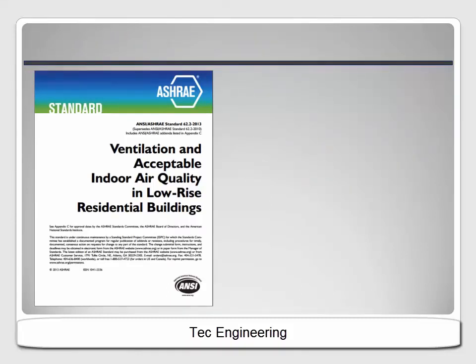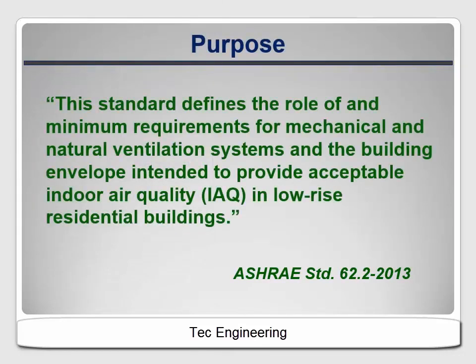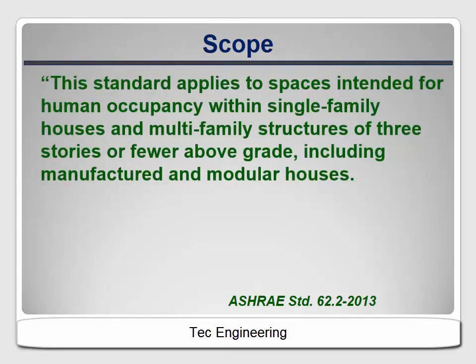Here are some quotes directly from the 2013 version of Standard 62.2. The purpose states that this standard defines the role of and minimum requirements for mechanical and natural ventilation systems and the building envelope intended to provide acceptable indoor air quality (IAQ) in low-rise residential buildings. The scope states that this standard applies to spaces intended for human occupancy within single-family houses and multi-family structures of three stories or fewer above-grade, including manufactured and modular houses.